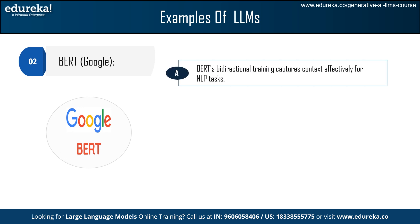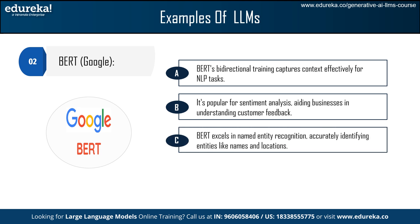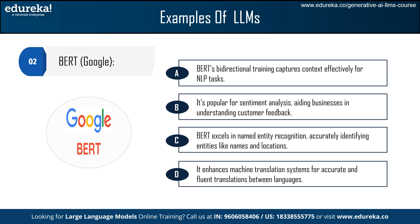The next example is BERT from Google. BERT's bidirectional training approach allows it to capture context from both directions, making it highly effective for various NLP tasks. It is widely used in sentiment analysis applications, helping businesses analyze customer feedback and gauge public opinion. BERT is also employed for named entity recognition tasks, where it accurately identifies and classifies entities such as names of people, organizations, and locations in text data. Furthermore, BERT is utilized in machine translation systems, facilitating accurate and fluent translations between different languages.